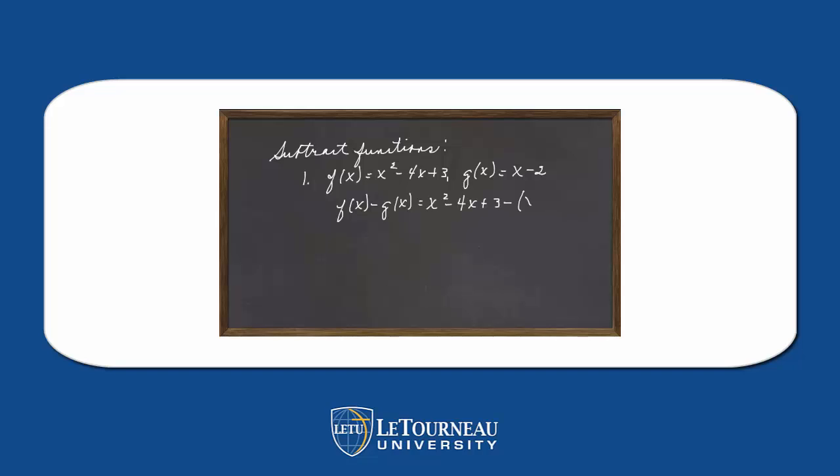We've got x squared minus 4x plus 3 minus the quantity x minus 2. x squared minus 4x plus 3 minus x plus 2, and we do some algebra. Don't ask me why I put three things on the equal sign and didn't correct it, but they're equal.